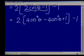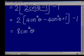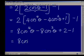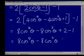Actually, minus one times minus one is plus one. So then we get two times four is 8cos⁴θ, minus 8cos²θ, plus two minus one. And we can tidy it up as 8cos⁴θ minus 8cos²θ plus one.